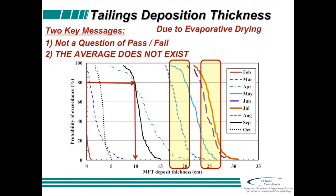That's the big stone we want to capture — because I want to make decisions based on probability and risk, not on the average. The average doesn't exist. I want to understand where my risk profile is. I can put out 30 centimeters of material in September and I've got a low probability of exceeding that target. I'm not saying you shouldn't do it — but understand what risk you're taking. It's not a question of pass or fail, and it's not based on the average. It's: what's the probability of me meeting my objective?